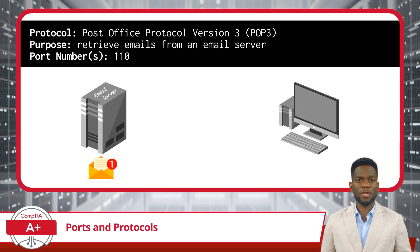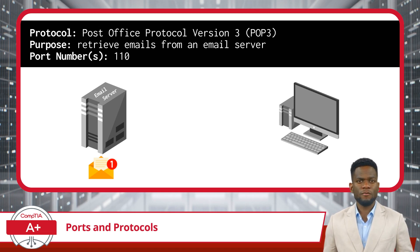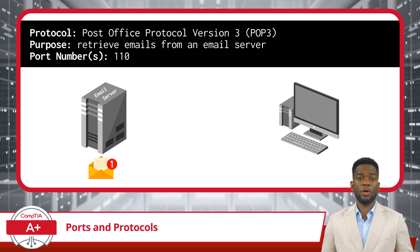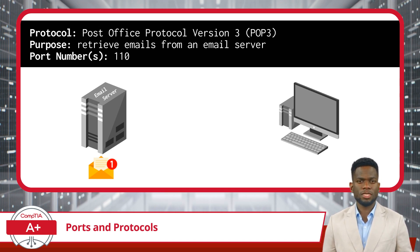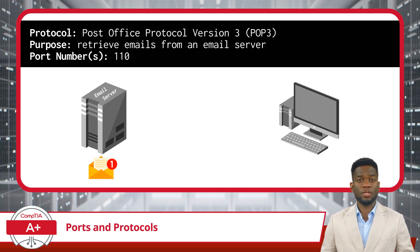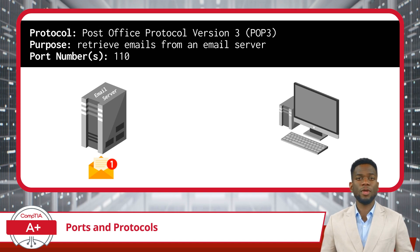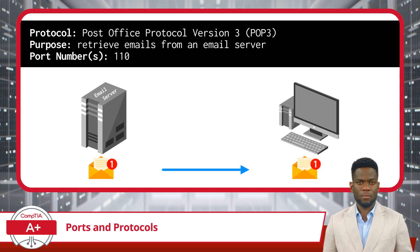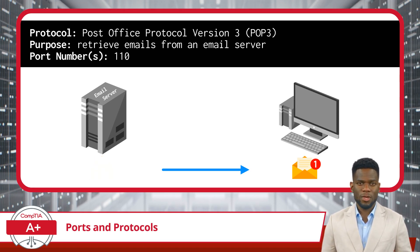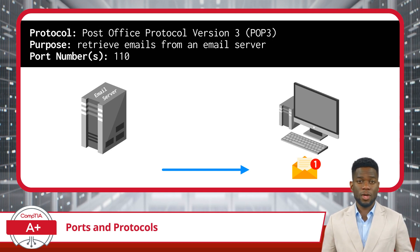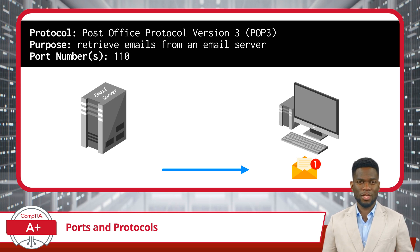Next we have POP3, short for Post Office Protocol Version 3, used for email retrieval. It's one of the oldest methods for email clients to retrieve messages from a server. Operating on port 110, POP3 downloads all messages from the server to the local device, and once downloaded, those emails are deleted from the server — making it a good option for users who access email from a single device. In its standard form, POP3 does not encrypt email data, which can pose a security risk on unsecured networks.